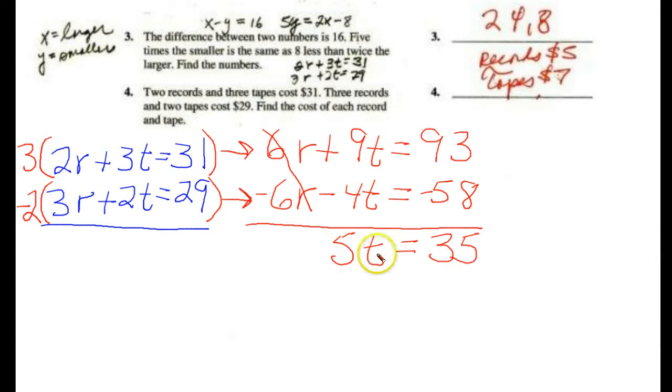So when we do this, these cancel out, this adds up to 5t, and this subtracts to 35. Again, we want to solve for t, so we're going to divide both sides by the numerical coefficient of our variable. So if we get t equals 7, we get t equals 7. And that's what we have. t is for tapes.